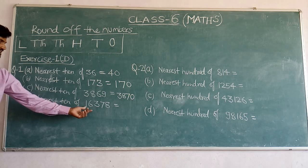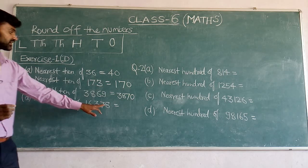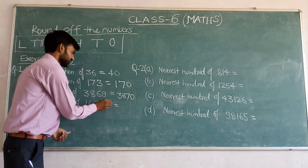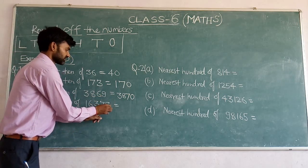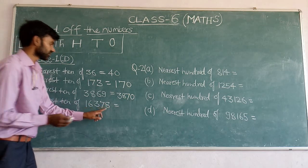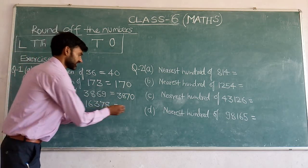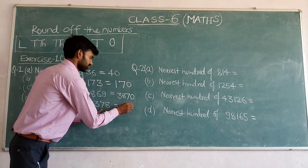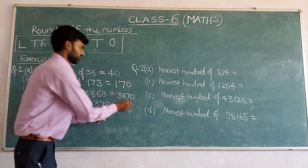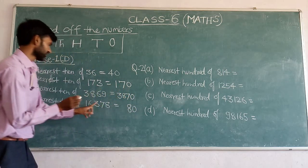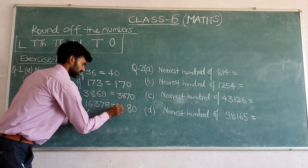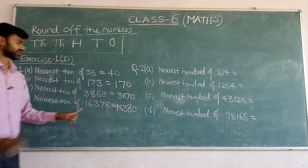Nearest ten of 16378: check the ones place digit — it is 8, which is greater than 5. So increase the tens digit by 1; 7 increases by 1 to get 8. Replace the ones digit by 0 and keep the other digits 1, 6, 3 as they are. The nearest ten of 16378 is 16380.